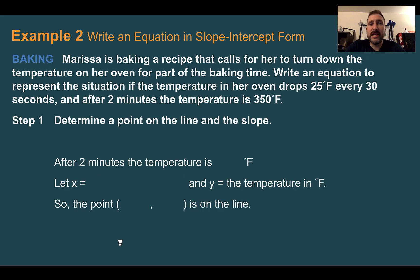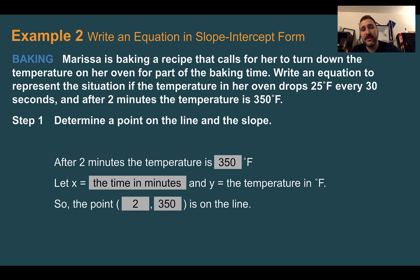Example 2: Write an equation in slope-intercept form. Our real context here is baking. Marissa is baking a recipe that calls for her to turn down the temperature on her oven for part of the baking time. Write an equation to represent the situation if the temperature in her oven drops 25 degrees Fahrenheit every 30 seconds and after 2 minutes the temperature is at 350 degrees Fahrenheit. So step 1, we need to determine a point on the line and the slope. Let's use what we're given. So after 2 minutes the temperature is at 350 degrees.